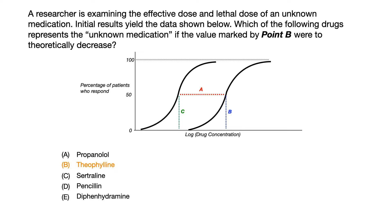We're looking at a couple of things here: point A, point B, and point C. In order to get this question right, you have to be able to identify what you're looking at on these graphs — patients who respond on the y-axis versus drug concentration on the x-axis. What we're looking at here is the therapeutic index. The red line, which was point A, represents the therapeutic index. The green line, which was point C, represents the effective dose in 50% of the population. And the blue line, which was represented by point B, represents the lethal dose in 50% of the population. These are very important metrics to be able to infer when you see them on a graph.